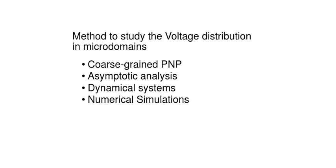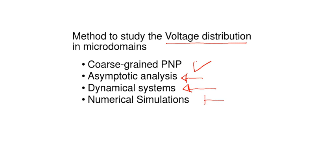The conversion from current to voltage is really what we are interested in, especially in terms of electrophysiology when the neuron is not under voltage clamp condition, where there is a linear relationship between voltage and current imposed by the electronics. The methods we will use to study voltage distribution are: coarse-graining of the Poisson-Planck equations, asymptotic analysis to determine voltage dependency on parameters, dynamical systems theory, and numerical simulations.